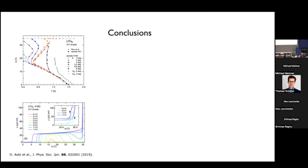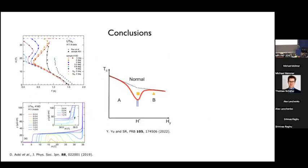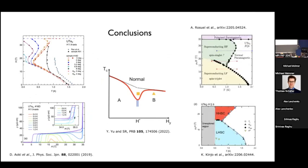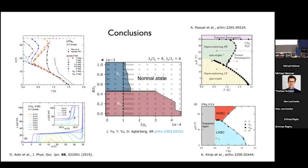To conclude: I started by describing re-entrant superconductivity in UTe2 and our simple mean-field proposal involving multiple superconducting phases — such multiple phases have now been seen in experiments. We then did a theory suggesting what the different superconducting order parameters would be: one is Au and one is Bu. Thank you for your attention.